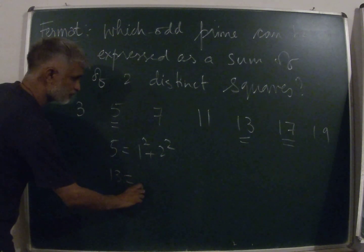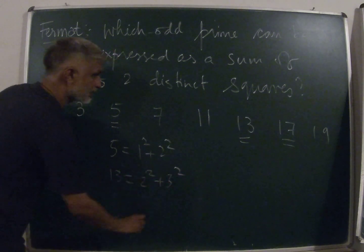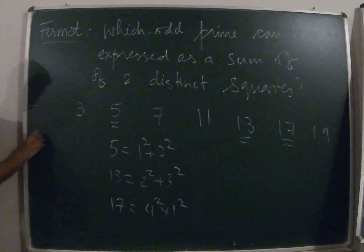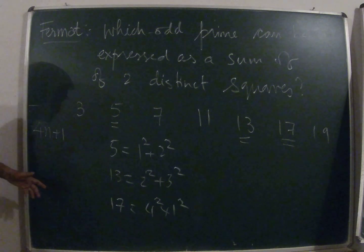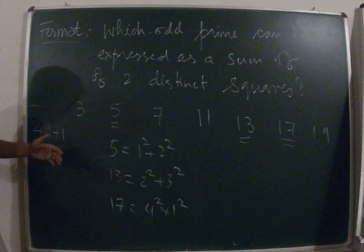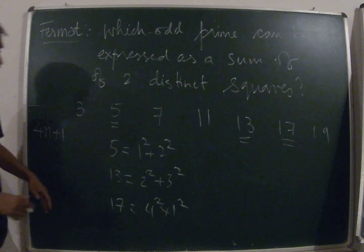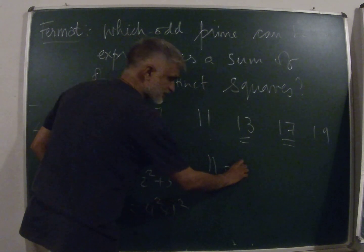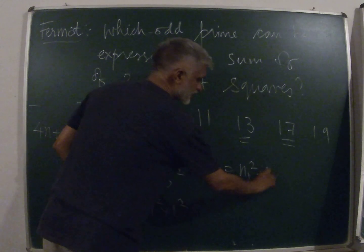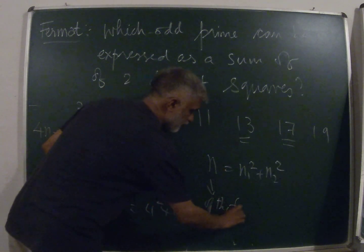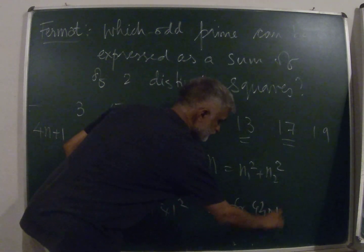This is 4 plus 5, this one is 4 plus 9, and 17 equals 4 squared plus 1 squared. Primes of the form 4n plus 1 can be expressed as a sum of two distinct squares; there is an existence proof for this by Fermat. The converse is also true: if a prime is expressible as the sum of two distinct squares, then n has to be of the form 4n plus 1.